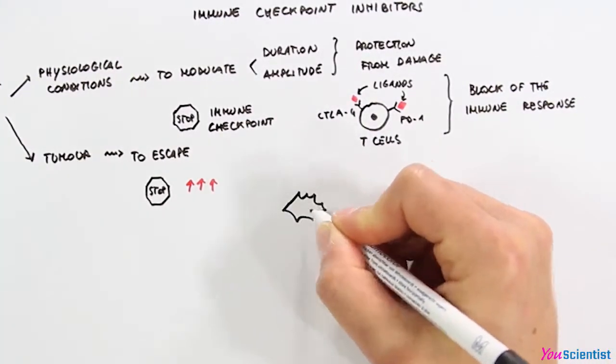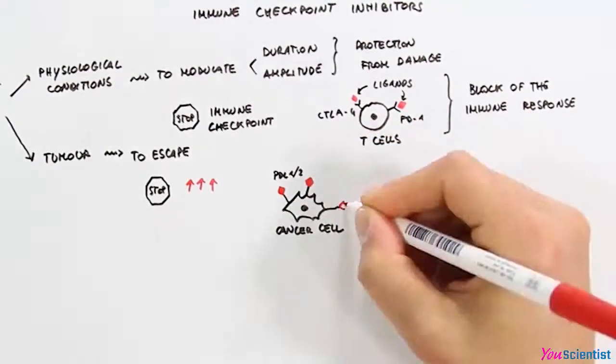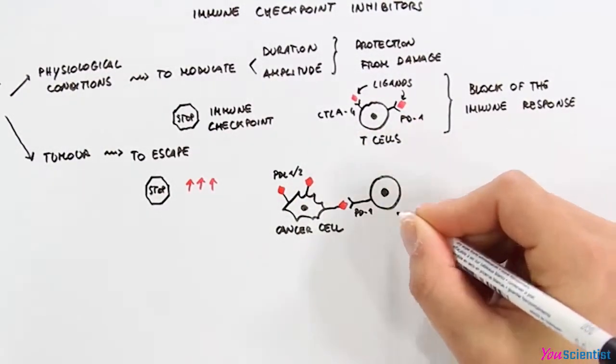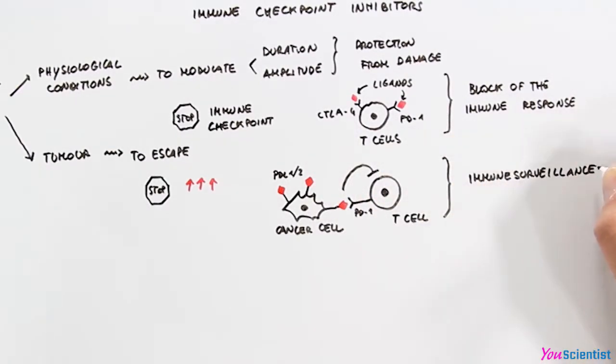Indeed, most cancer cells express the ligands for PD-1. These ligands are called PD-L1 and PD-L2. The interaction between that ligand and that receptor blocks the activity of T cells and consequently reduces immunosurveillance.